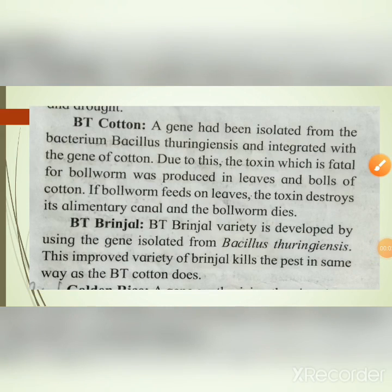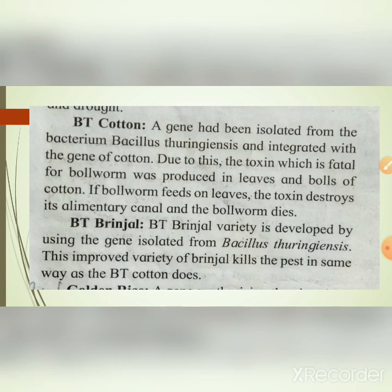BT Cotton: a gene has been isolated from the bacterium Bacillus thuringiensis and integrated with the genes of cotton. Due to this, a toxin which is fatal for ball worms is produced in the leaves and balls of the cotton. If ball worms feed on the leaves, the toxin destroys their alimentary canal and the ball worms die.